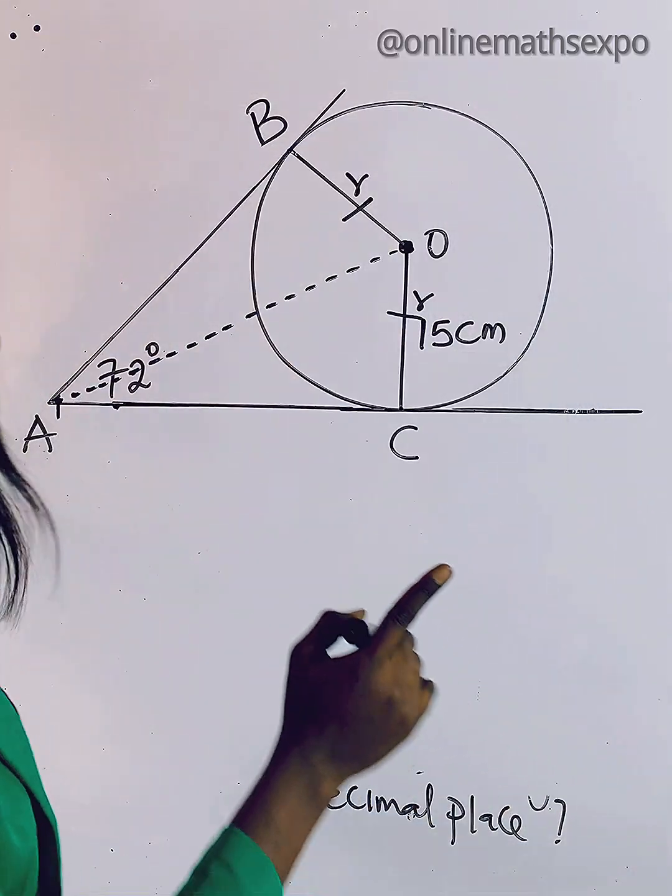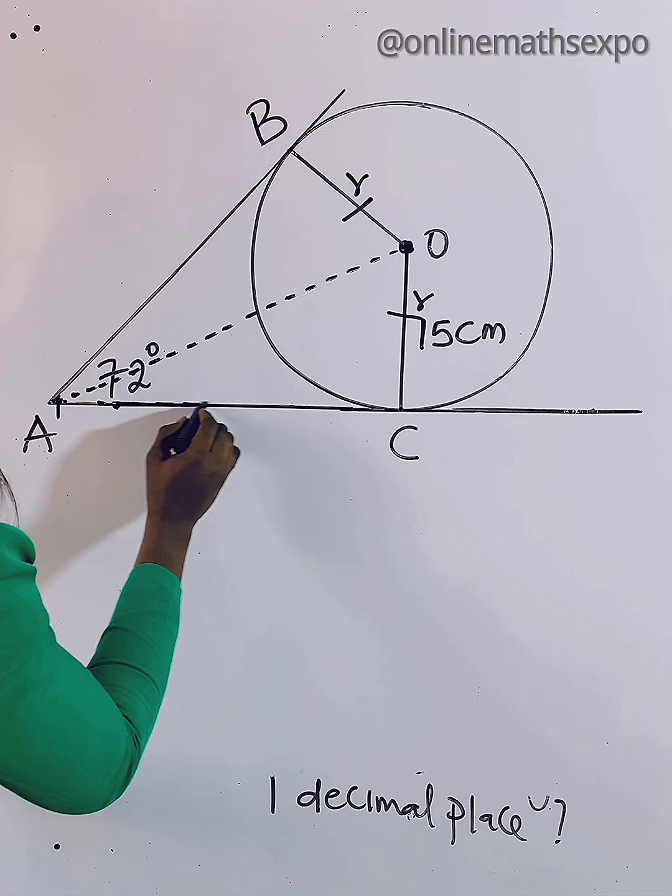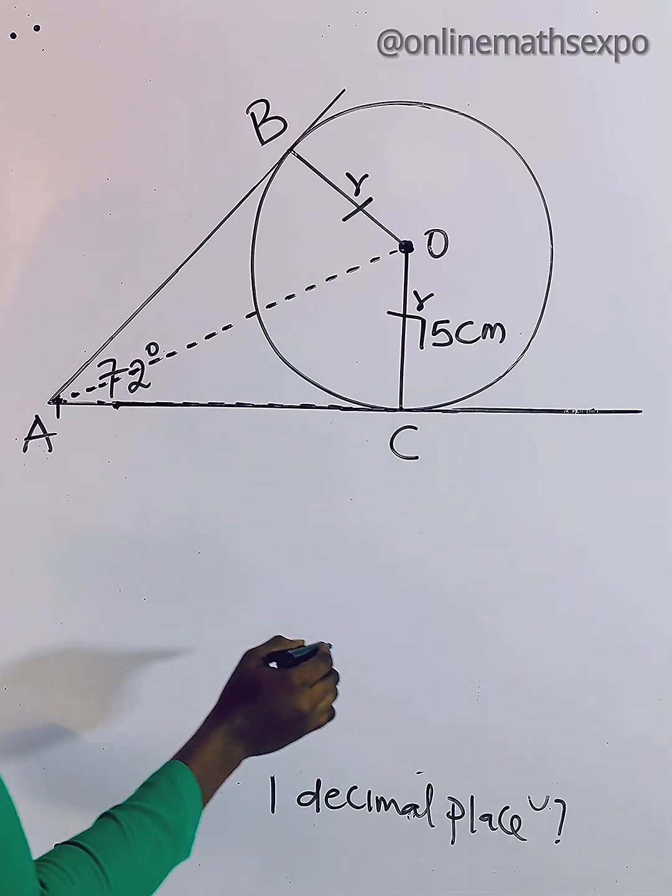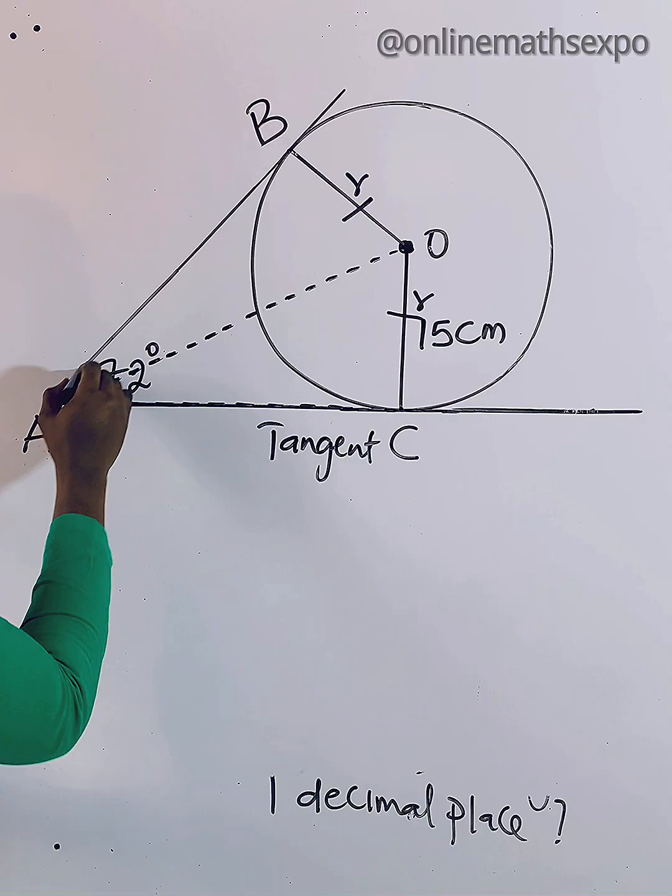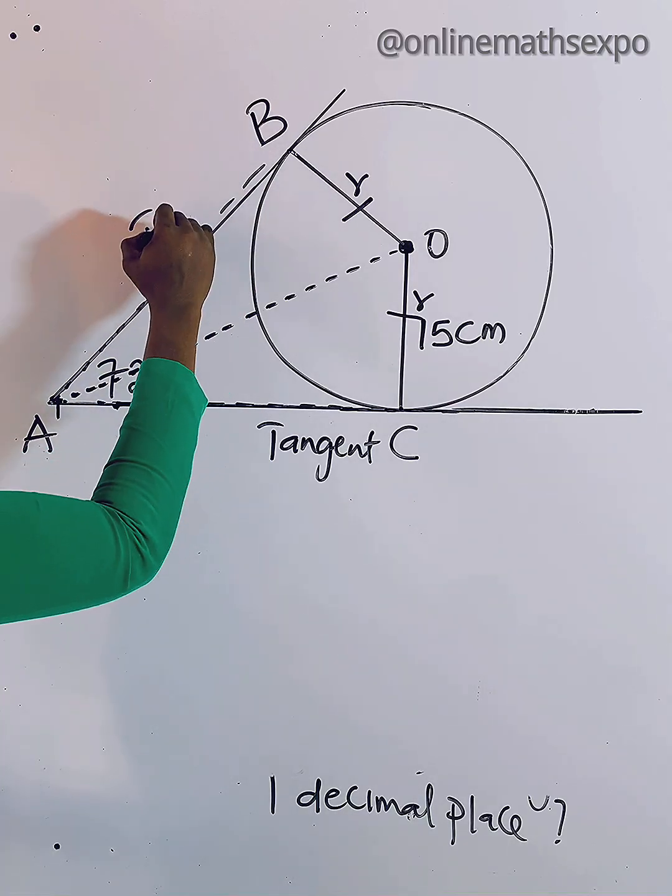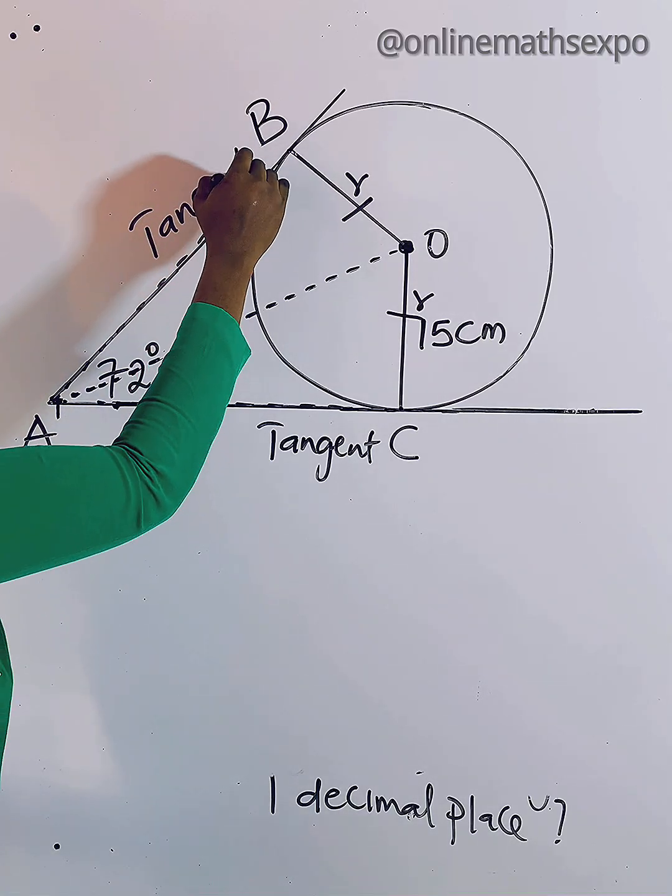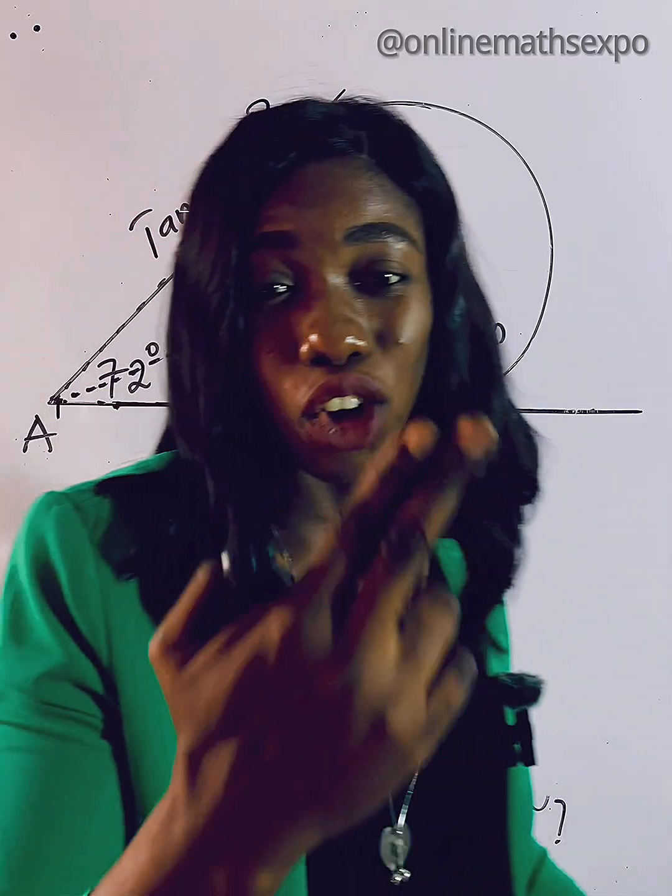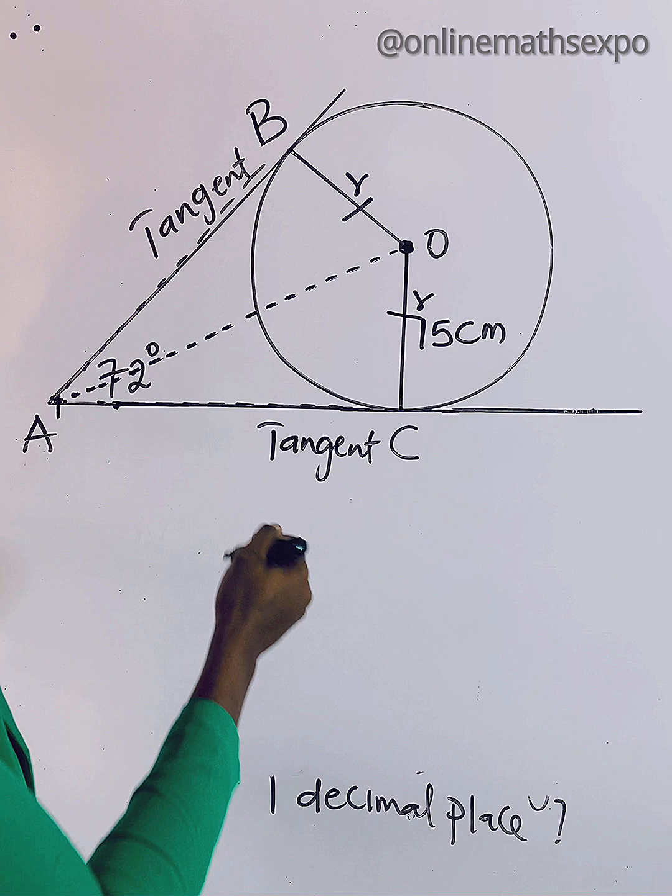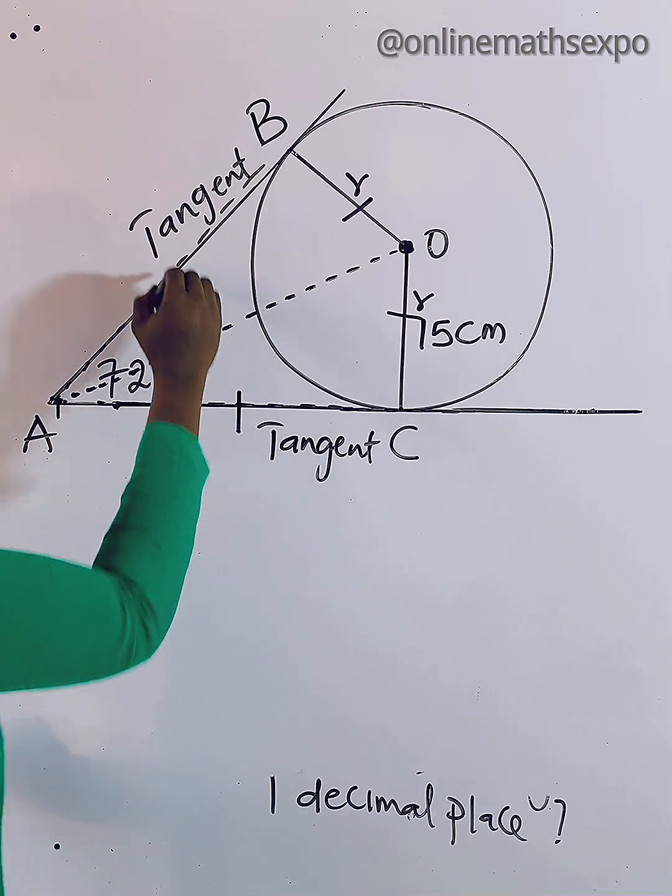Now what other thing do you need to know? This question said that this line is a tangent. If this line is a tangent and this one also is a tangent, it reminds us that whenever you have two tangents coming together at a point, those two tangents are always the same. So it means that this line is also the same with this line.